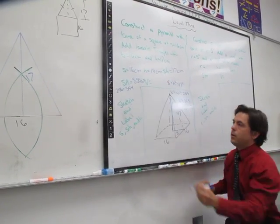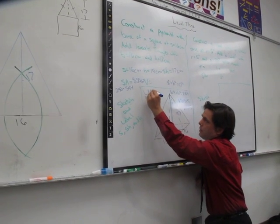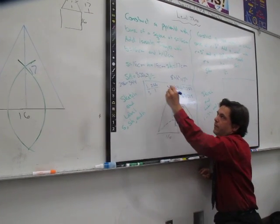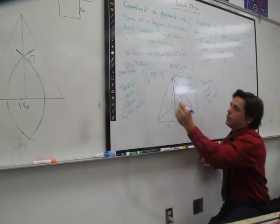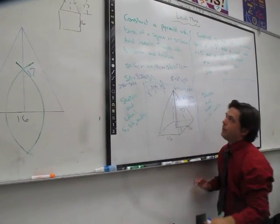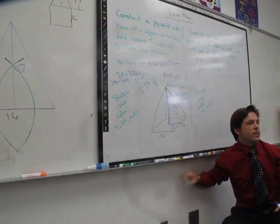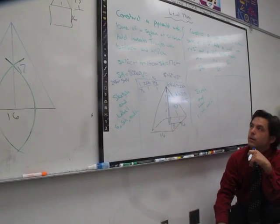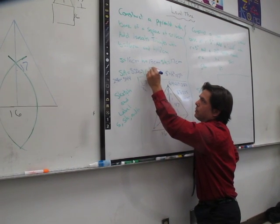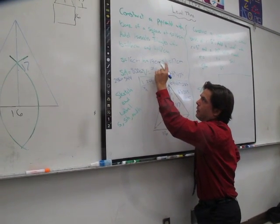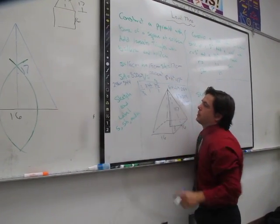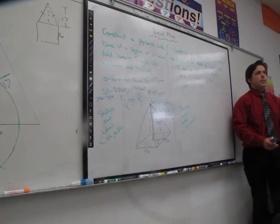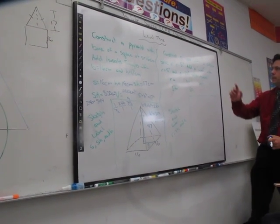And last, volume. 1 third times the area of the base which is 256 over 1 times what's the height here? 15. Quiet please. Reduce the 3 with the 15. This becomes a 5. We end up with 256 times 5. What's 256 times 5? 1280.